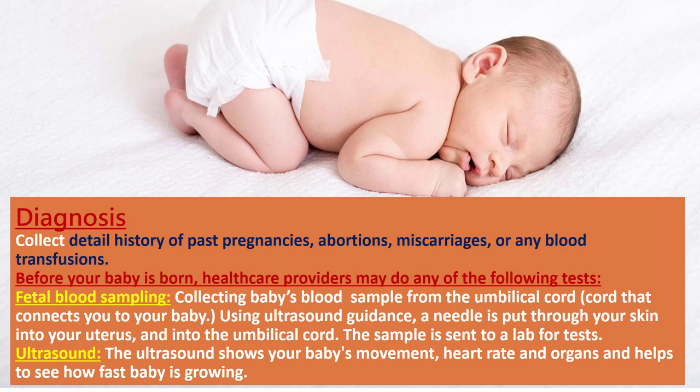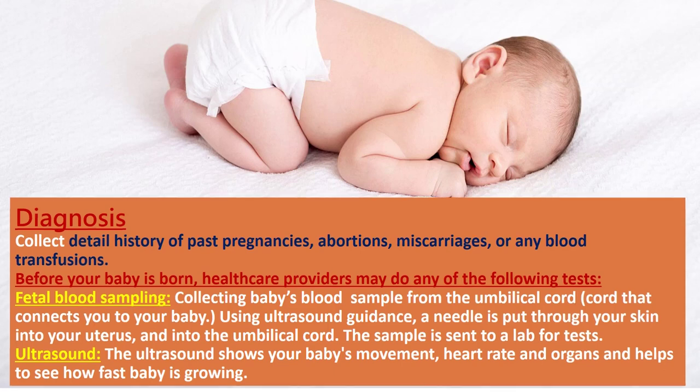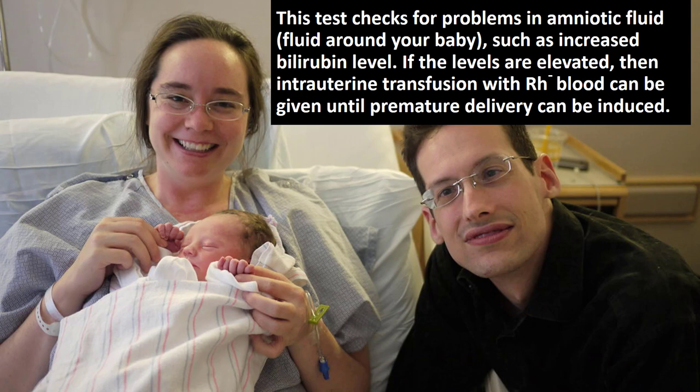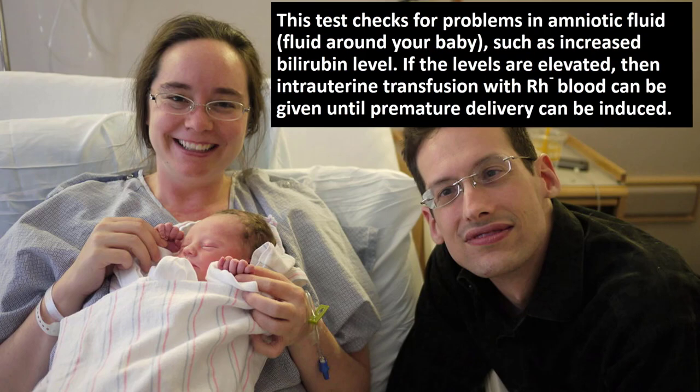Diagnosis: Collect a detailed history of past pregnancies, abortions, miscarriages, or any blood transfusions. Before your baby is born, healthcare providers may perform the following tests. Fetal blood sampling involves collecting the baby's blood sample from the umbilical cord using ultrasound guidance, where a needle is inserted through the skin into the uterus and umbilical cord, and the sample is sent to a lab. Ultrasound shows the baby's movement, heart rate, and organs, and helps assess growth. Amniocentesis involves taking a fluid sample by inserting a needle into the amnion using ultrasound guidance; the sample is sent to a lab to assess the baby's risk of anemia and checks for increased bilirubin levels. If levels are elevated, intrauterine transfusion with RH negative blood can be given until premature delivery can be induced.